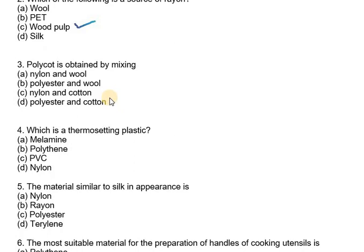Now the third part says polycot is obtained by mixing: nylon and wool, polyester and wool, nylon and cotton, polyester and cotton. So polycot is actually a mixture of polyester and cotton. It is a mixture of polyester and cotton, not with wool. So the right option is D.